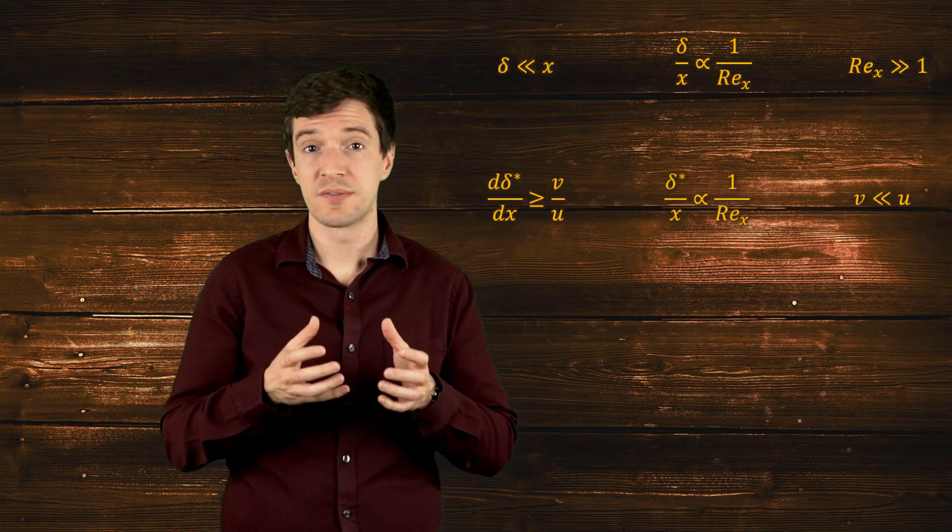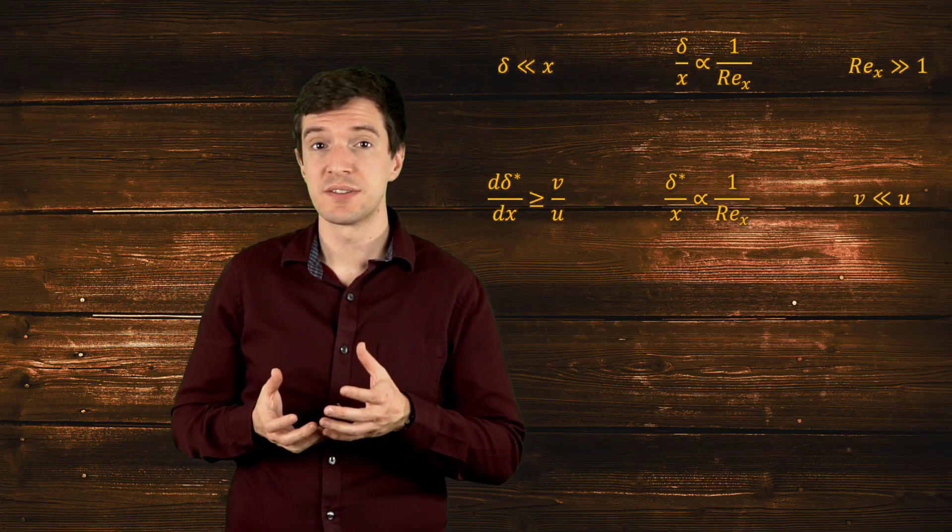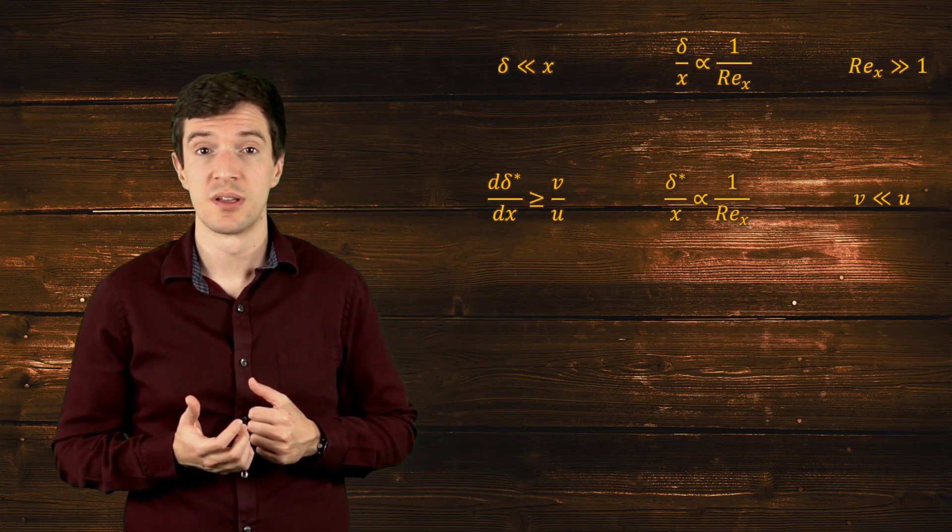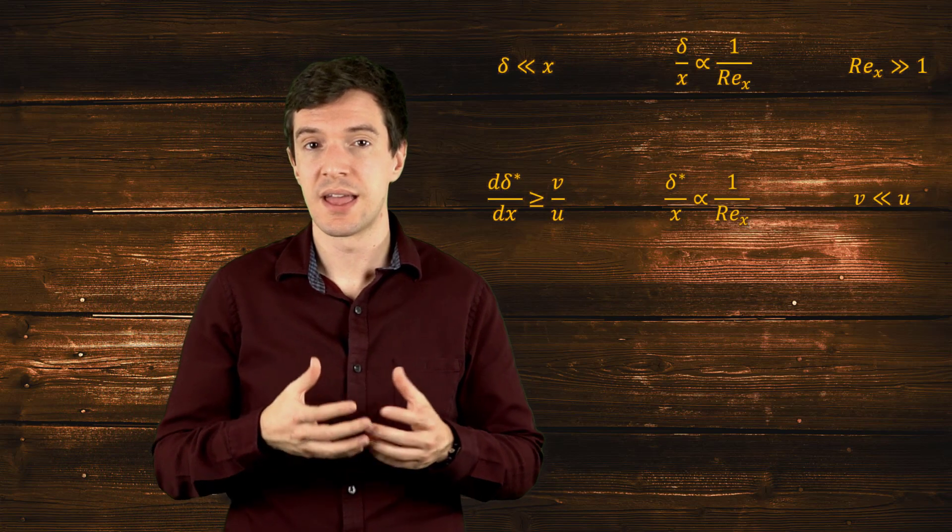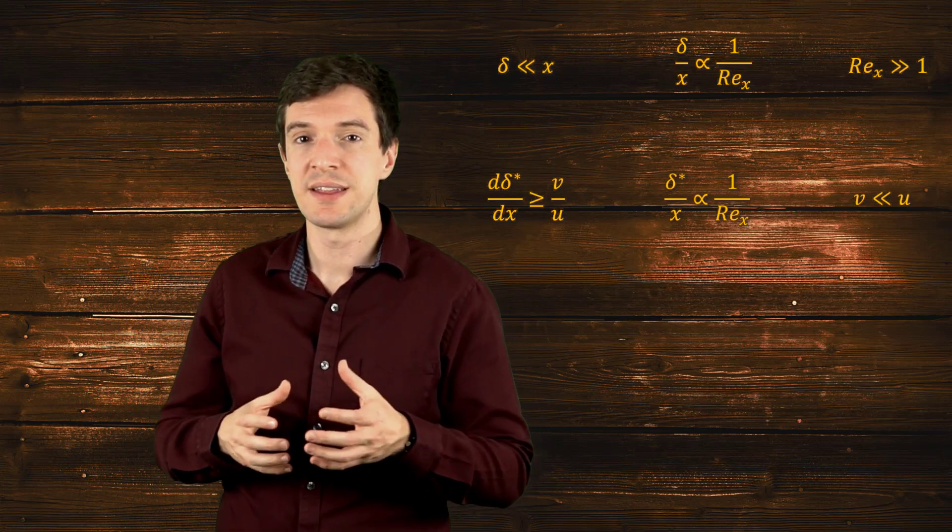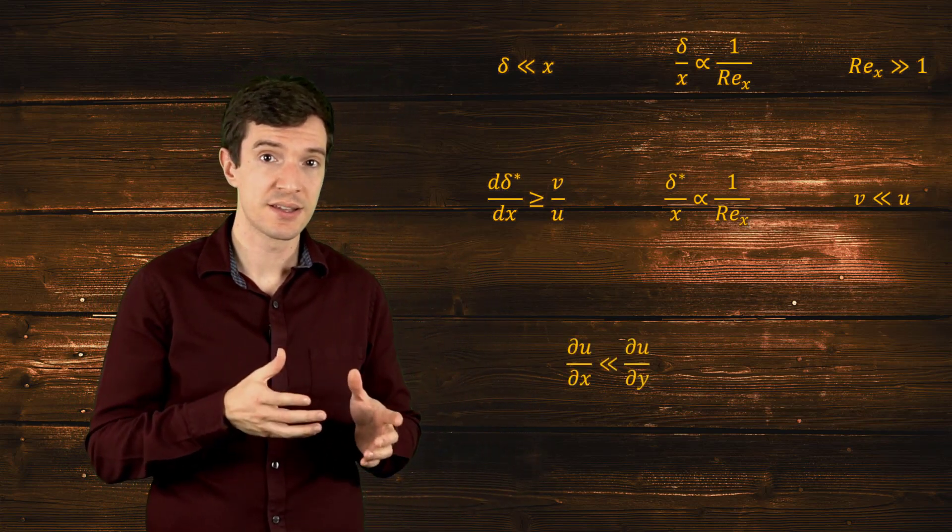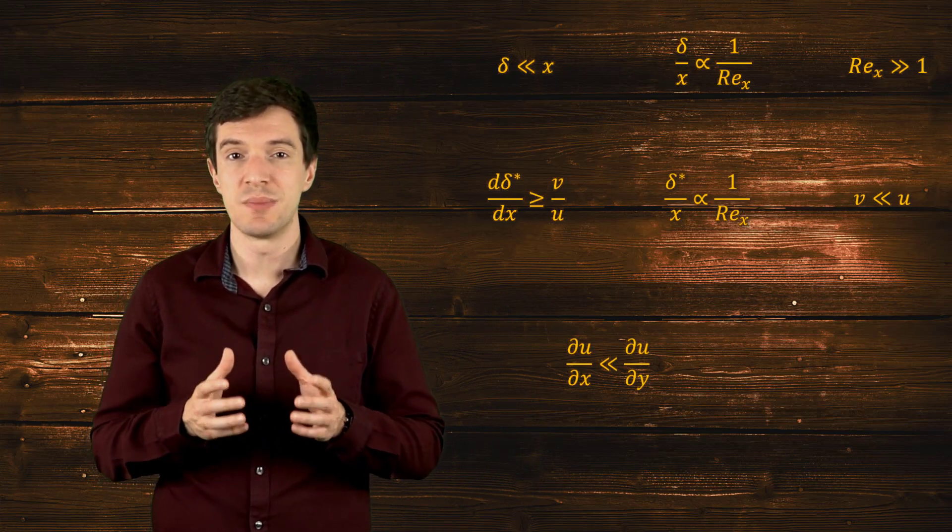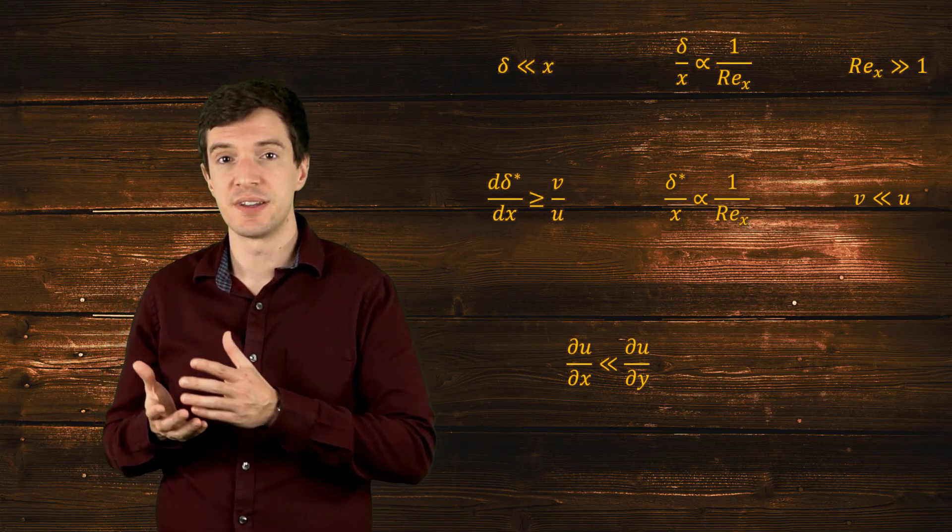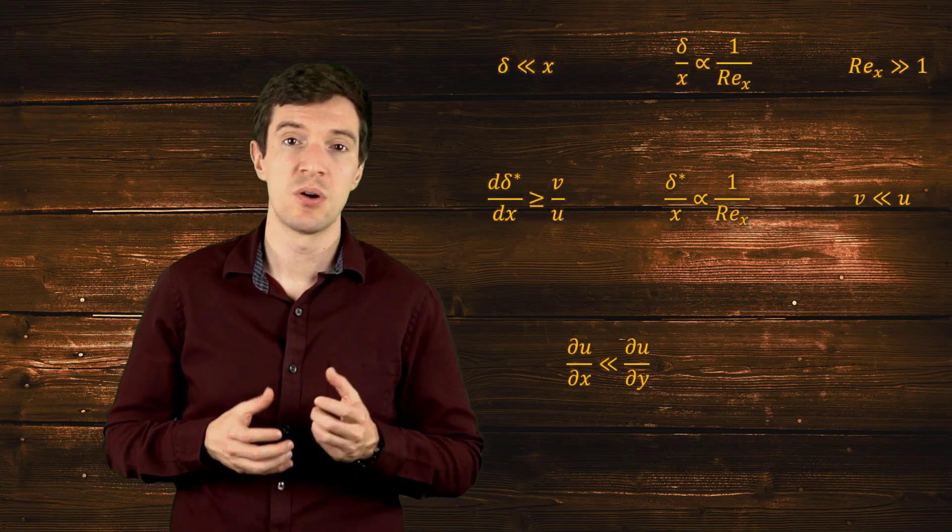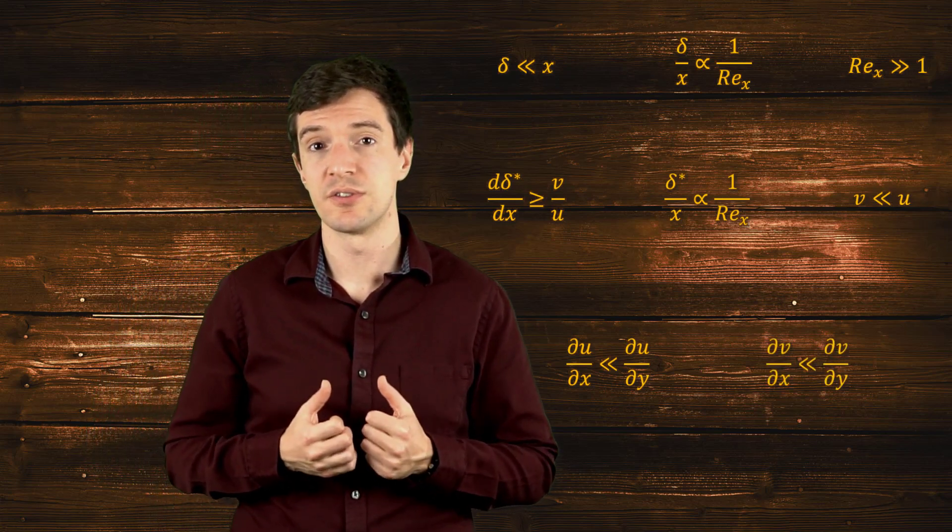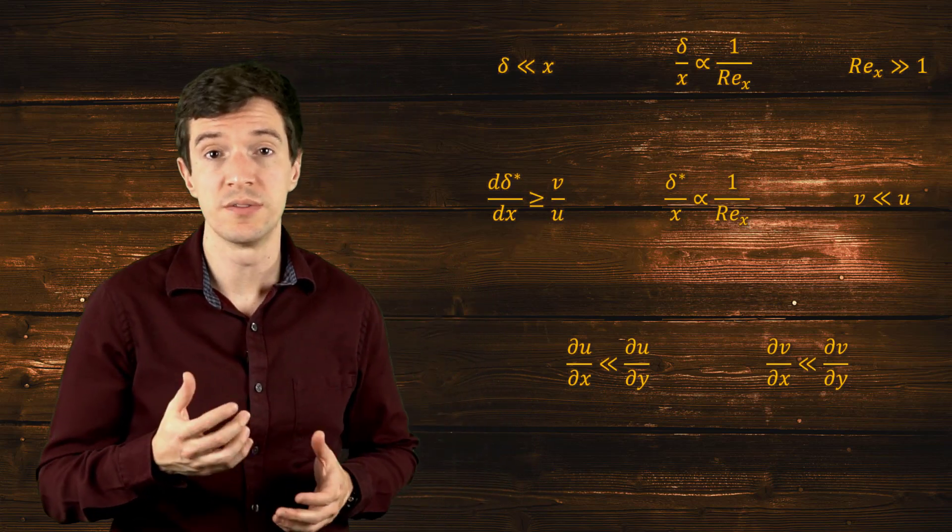That quadratic velocity profile gives us additional information. Indeed, differentiating it with respect to x and to y, we can find that the variation along x of the velocity component is much smaller than its variation normal to the wall. The same also for the normal component of the velocity.